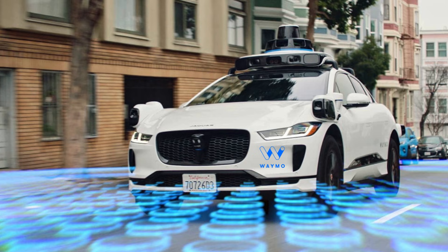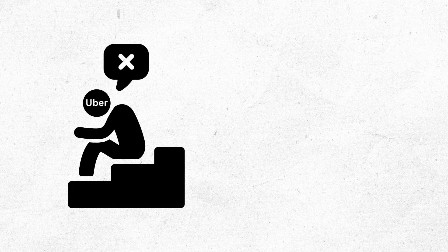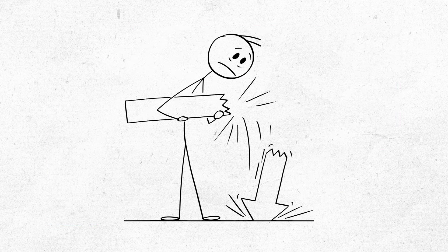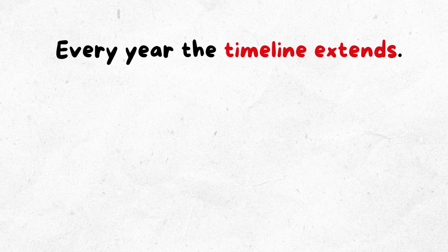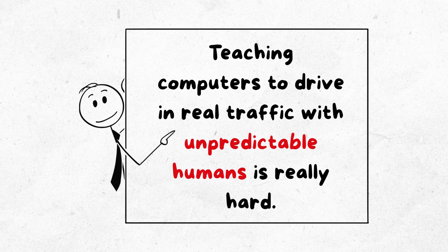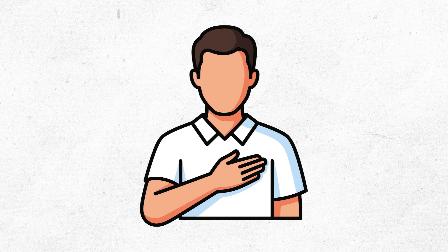Waymo has robot taxis, but only in a few cities with perfect weather. Uber gave up after their car killed a pedestrian. Billions invested. No real results. Every year the timeline extends. Five more years. Teaching computers to drive in real traffic with unpredictable humans is really hard. The promise continues. Any day now.